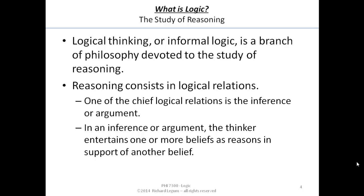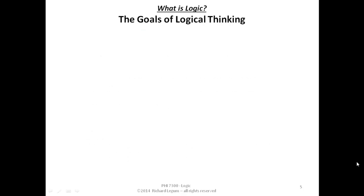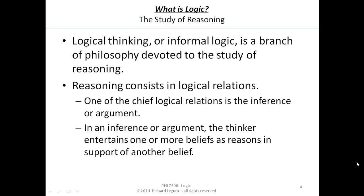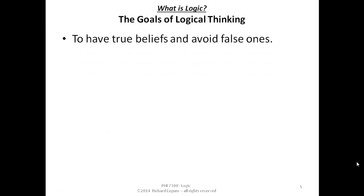The reason we're worried about this has to do with the goals of logical thinking or informal logic. We really have two major goals. Goal number one is that we want to have true beliefs and avoid false ones. So it's kind of a complex goal.